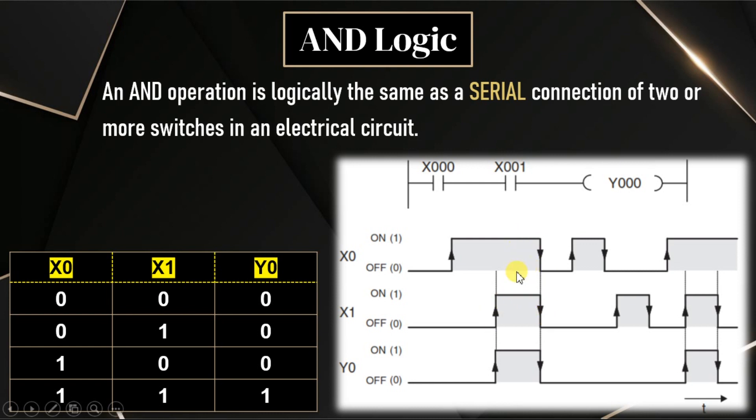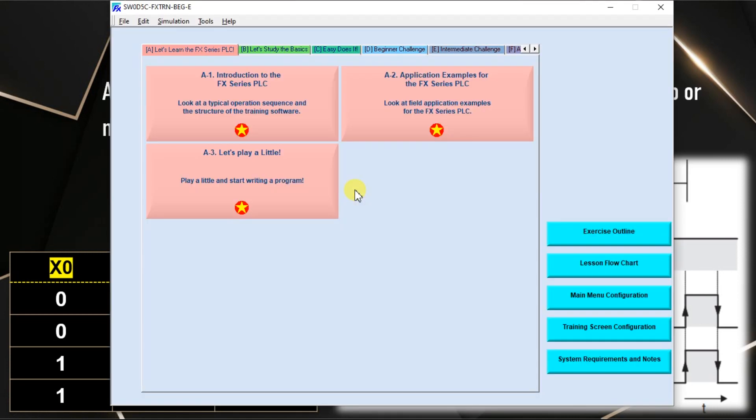If both are on, both inputs are on, then only output is on. If both of the inputs or any one of the input is off, then output is off. The same thing is represented in timing diagram. We can discuss the same logic in ladder logic. So go to our software.